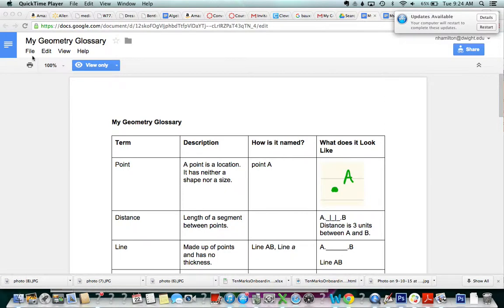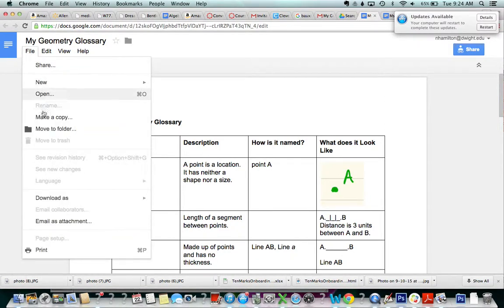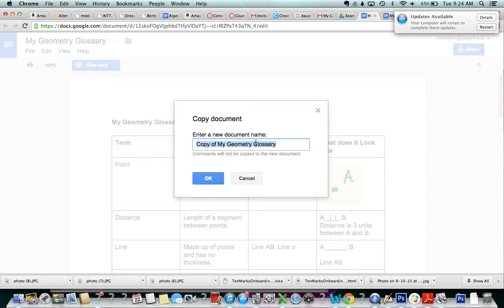I'm going to go to File, so I click File, I go down to Make a Copy, click that. And now I want to name it my Google Doc. I don't want it to have the original name and I don't want to have that word 'copy' in it.